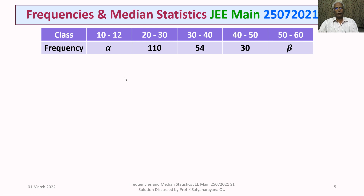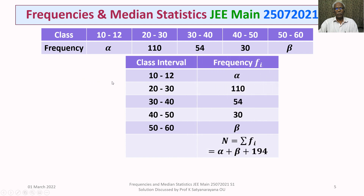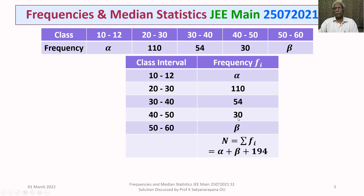This is the frequency distribution given to us. We prepare a table where the first column is class interval and the second column is frequency fi. The classes are 10–20 (alpha), 20–30 (110), 30–40 (54), 40–50 (30), and 50–60 (beta). The total N equals sigma fi, which is alpha plus beta plus 110 plus 54 plus 30, summing to alpha plus beta plus 194.